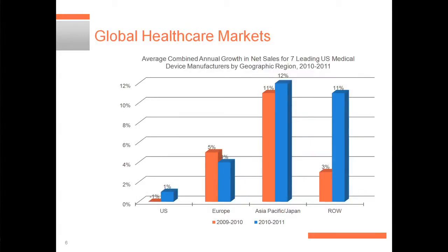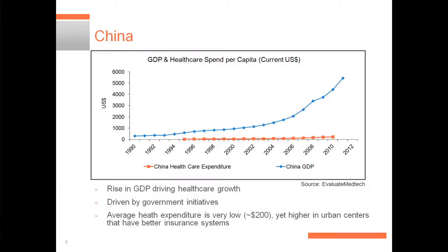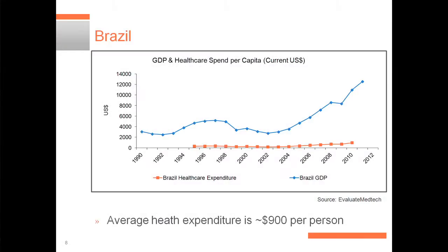Why do we want to worry about global markets? Because those are the ones that are growing. Looking at the China numbers, China's GDP growth has been growing very significantly, but if you look at healthcare expenditures, it's relatively low. So looking at your target markets and how your product is going to be used is important.